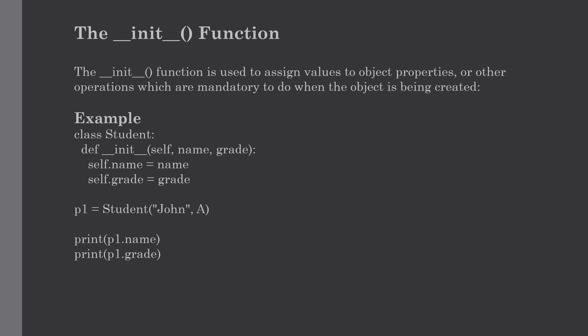In the previous lecture we saw what is an init function, but you might be confused with 'self'. The self parameter is a reference to the current instance of the class and it is used to access the variables that belong to the class. It does not have to be named self — you can call it whatever you want, but it has to be the first parameter of any function in the class.